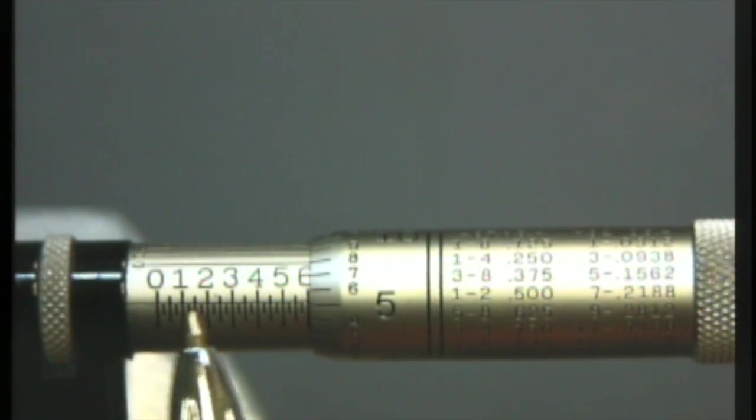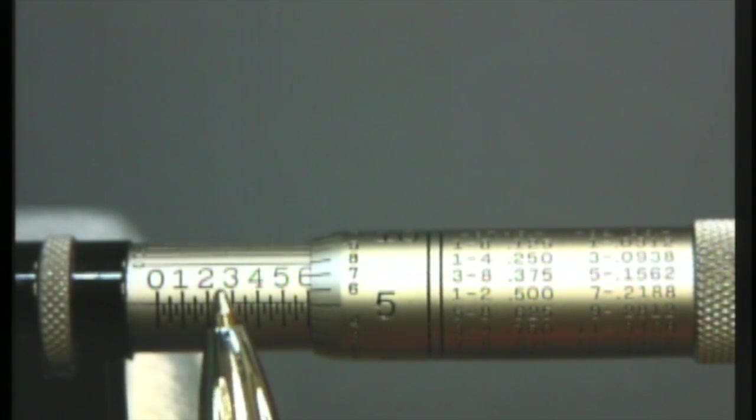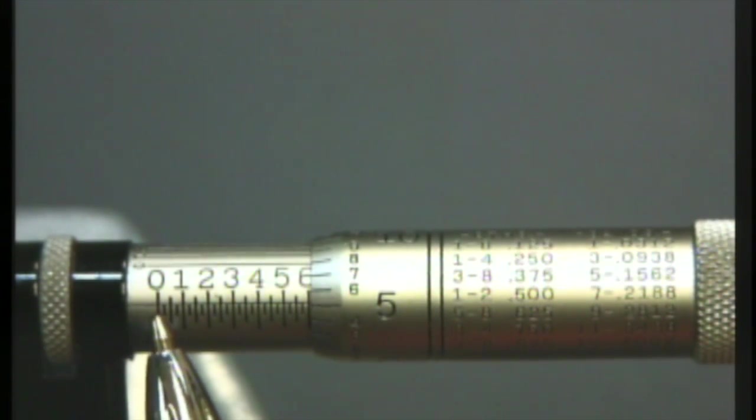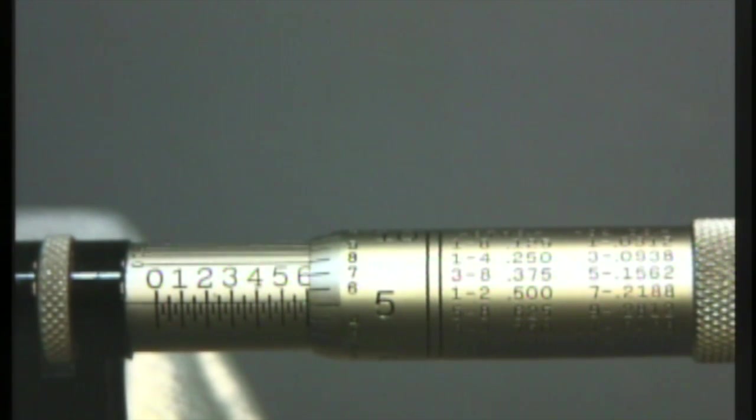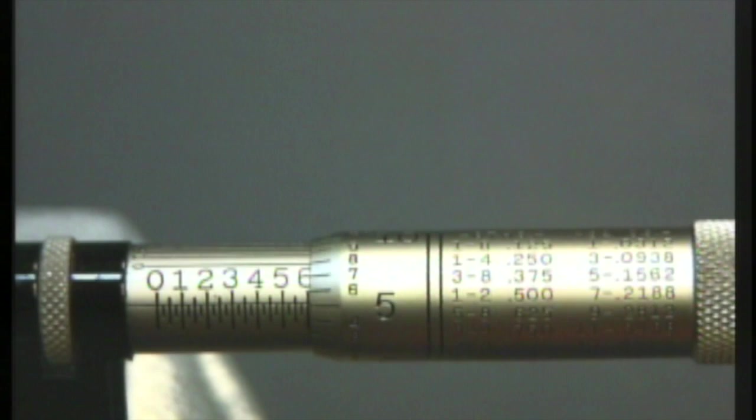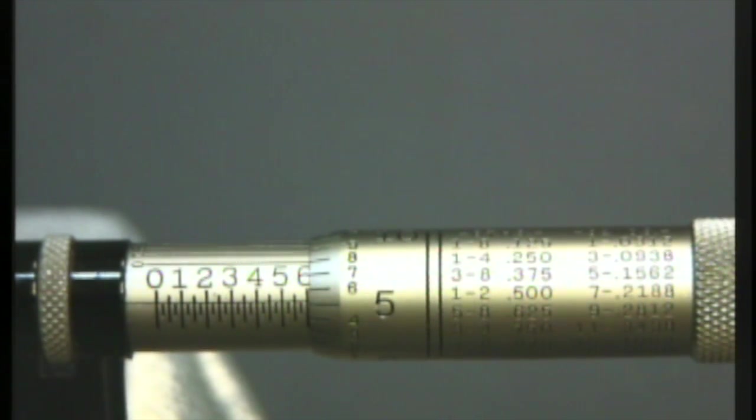Notice that we have some other graduations here. When we go from the zero to the first line in, we see that there are actually four lines from zero to one, and so the first line is twenty-five thousandths. Second line, fifty thousandths. Third line, seventy-five thousandths. And in total, from the zero to the one, that's one hundred thousandths. Same thing as we go on, one hundred and twenty-five, one hundred and fifty, one hundred seventy-five, two hundred thousandths. So that scale on our sleeve is fairly easy to understand.